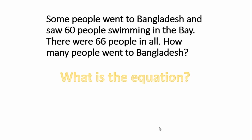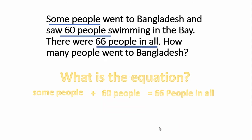Let's take a closer look at our story problem. What exactly is our question asking us? It's asking how many people went to Bangladesh. We know there are some people and we know there are 60 people swimming in the bay, and that equals a total of 66 people in all. So our equation is: blank plus 60 equals 66. If you answered six, you're correct.